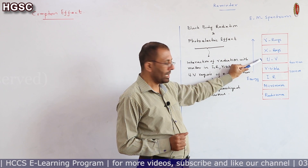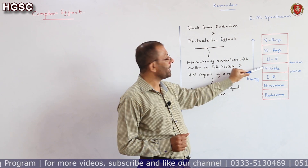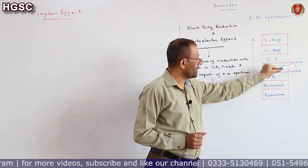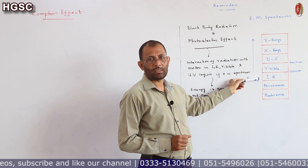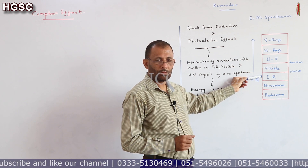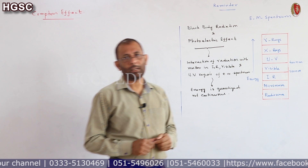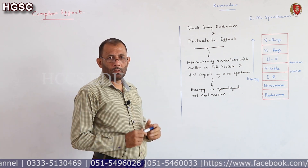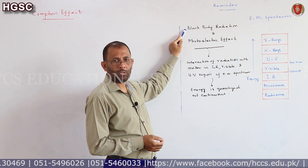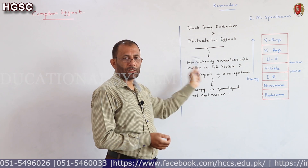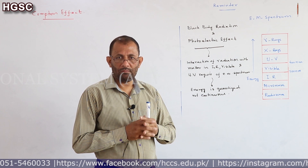Radio waves have the longest wavelength but smallest frequency. X-rays and ultraviolet are invisible. The only visible region of the electromagnetic spectrum is from 400 nanometers to 700 nanometers. Radiation with wavelength greater than 700 nm — infrared, microwave, and radio waves — is also invisible. Before this, we studied two interactions of radiation with matter.